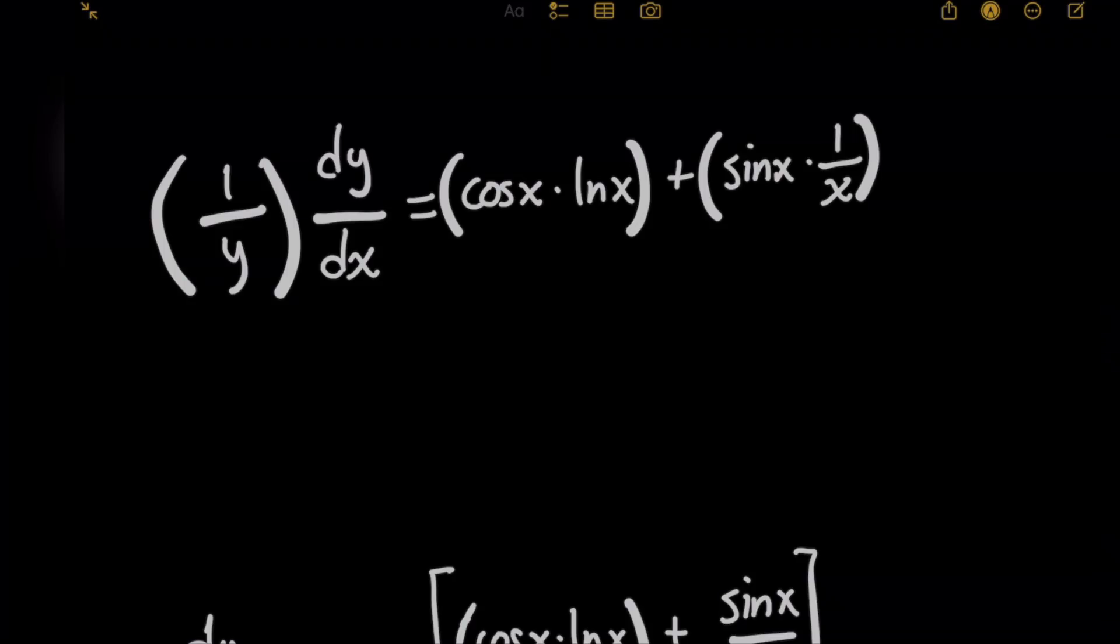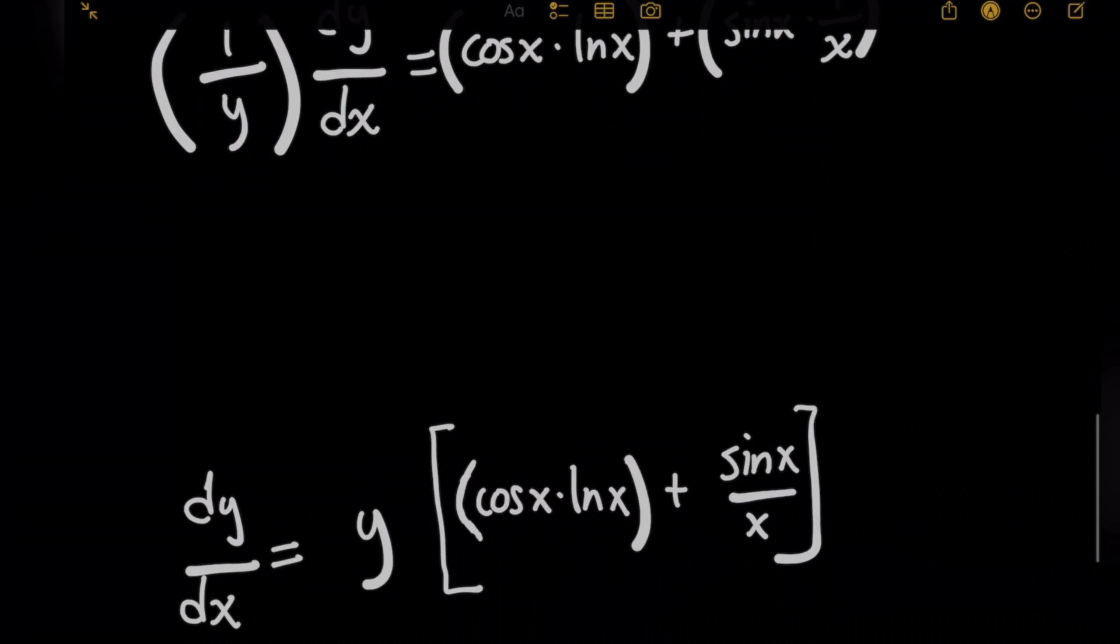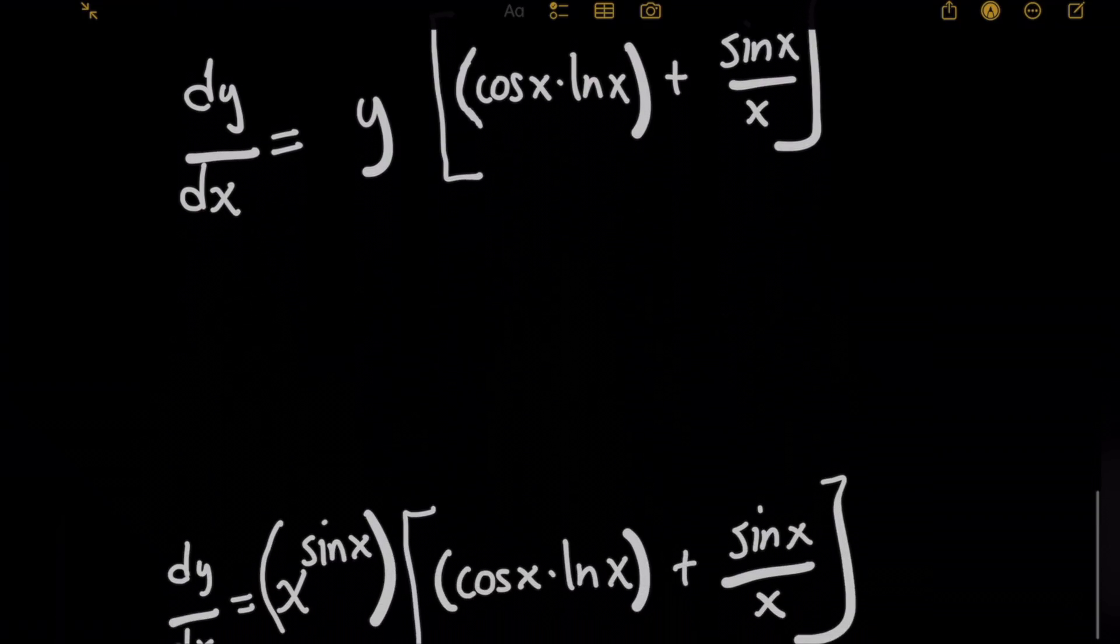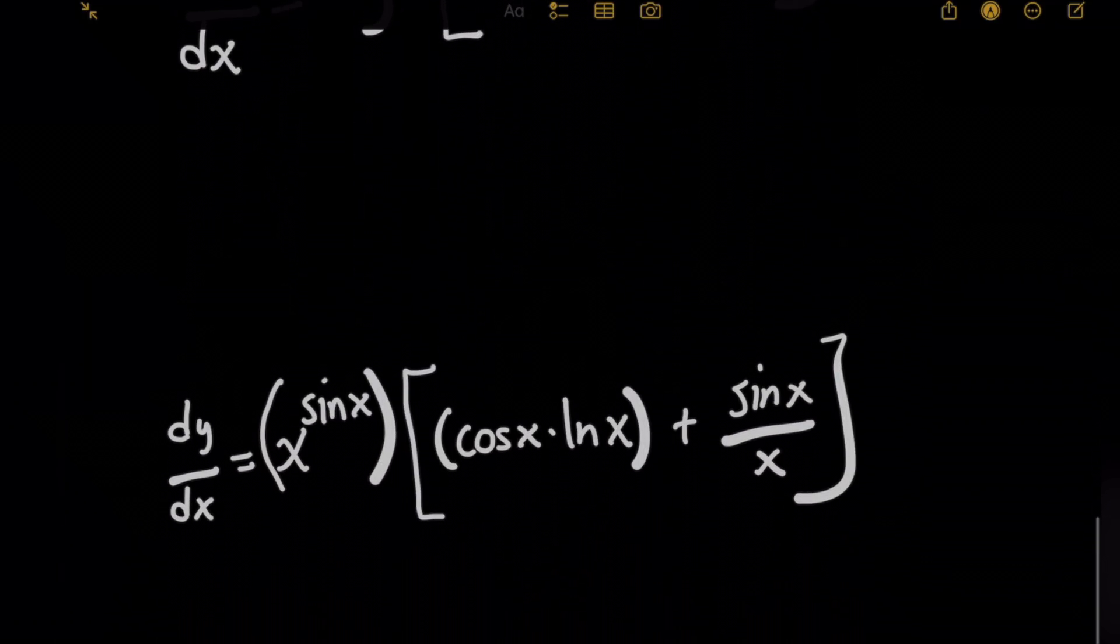So multiplying both sides by y will isolate dy over dx on the left. And now we have this y factor in front of everything in brackets here. But we can't just stop here because if we want to get our true answer, it needs to be in terms of only x on the right hand side, right? But we know what y is, it's x to the sine of x, giving you the final answer.